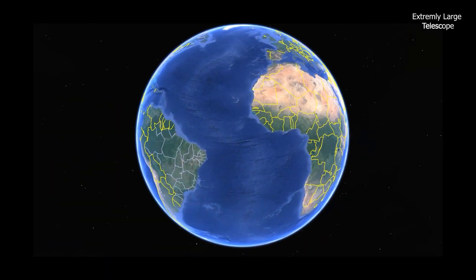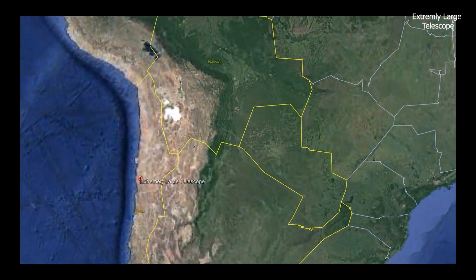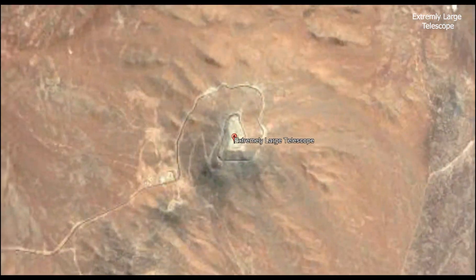The construction site of Extremely Large Telescope is located on Cerro Armazones, a mountain in the Atacama Desert of Chile.